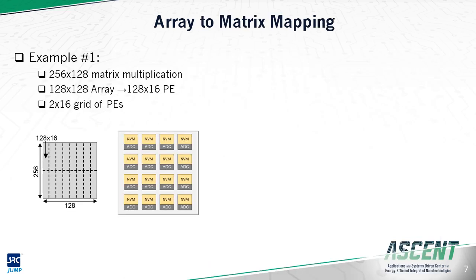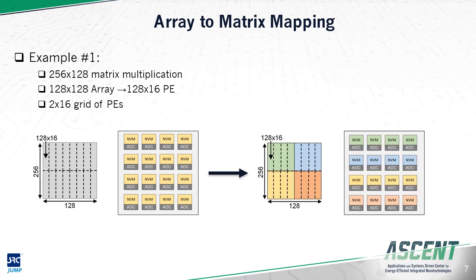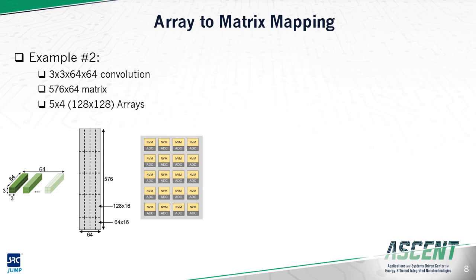Now that we understand how these arrays serve as both storage and compute for partial matrix multiplication, we can go through some mapping examples. For the first example, we want to map a 256 by 128 matrix multiplication to hardware consisting of 16 128 by 128 arrays. If we slice up the 256 by 128 matrix into 16 128 by 16 matrices, we can map each one to one of our 16 PEs. In example 2, we map a standard 3 by 3 by 64 by 64 convolutional layer, decomposing it into a 576 by 64 matrix, and slice it into a 5 by 4 grid of partial matrices. Note that the last slice is only 64 by 16 because 576 does not divide evenly into 128.